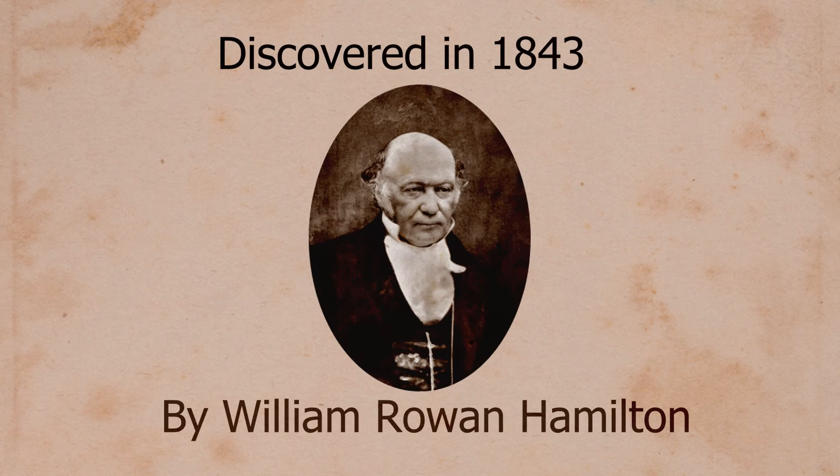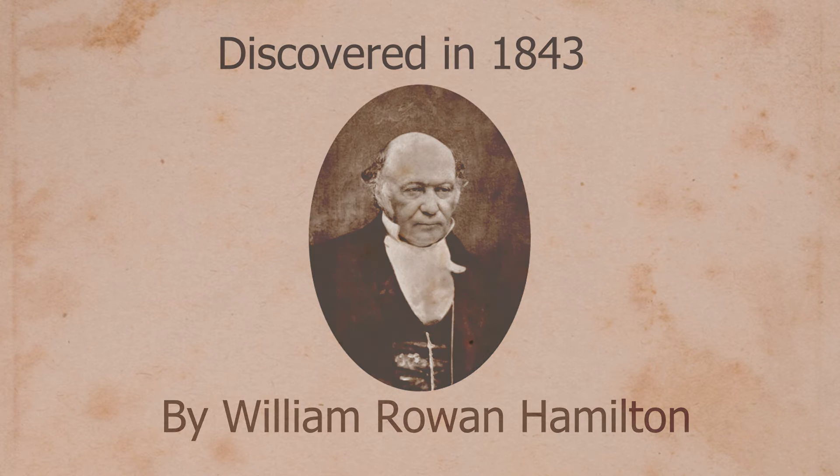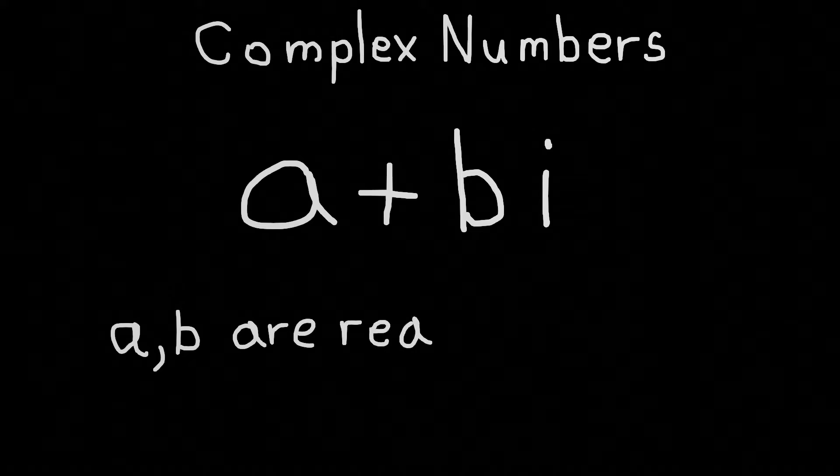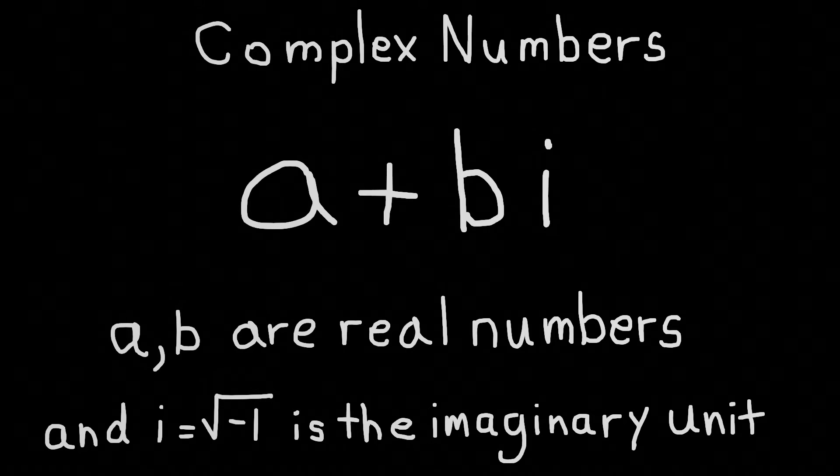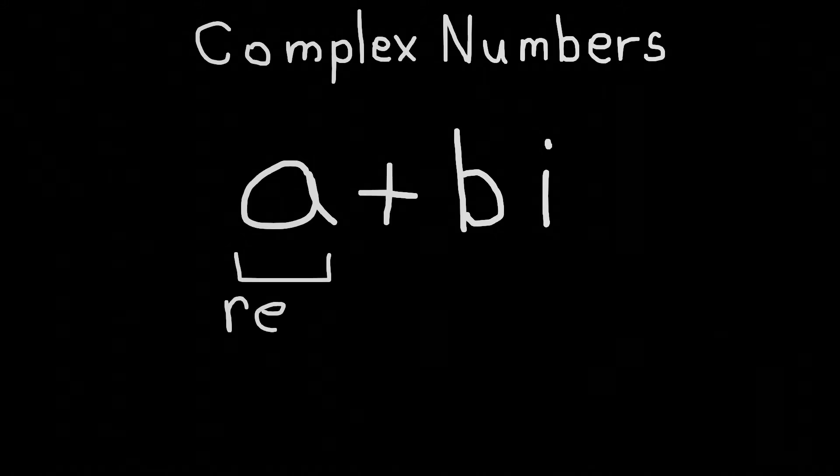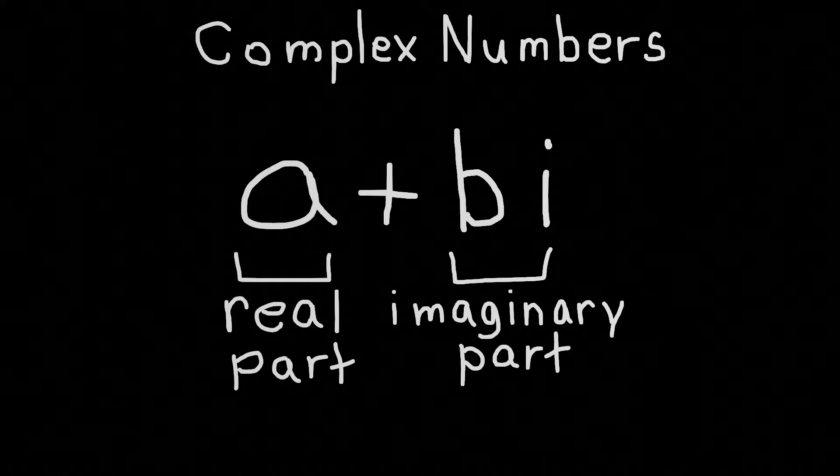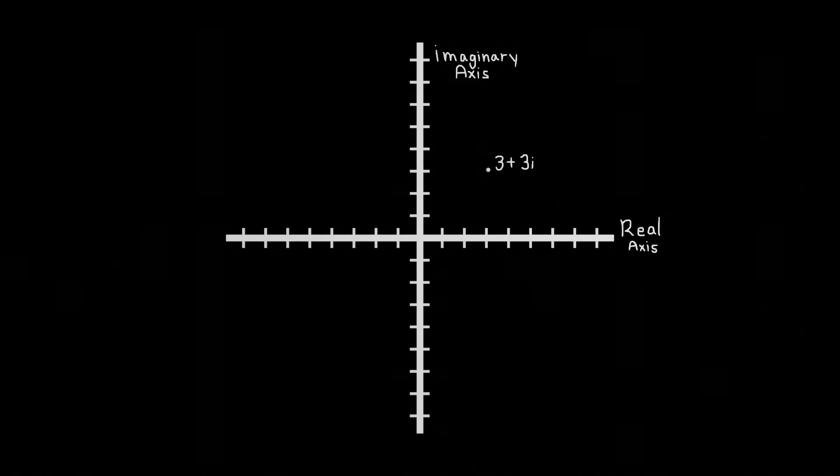Quaternions were discovered in 1843 by William Rowan Hamilton as an extension of the complex numbers into higher dimensions. A complex number takes the form of a plus bi, where a and b are real numbers, and i equals the square root of negative one is the imaginary unit. These numbers can be thought of as two-dimensional numbers, with a real component and an imaginary component, and can be represented on the complex plane, much in the same way that we represent an x and y point on the Cartesian plane.